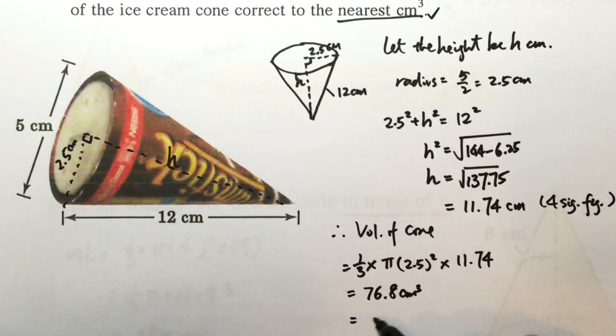And correct to the nearest cm³, we have 77 cm³.